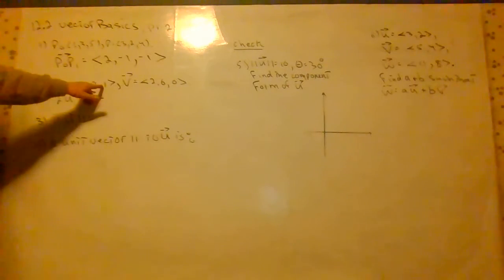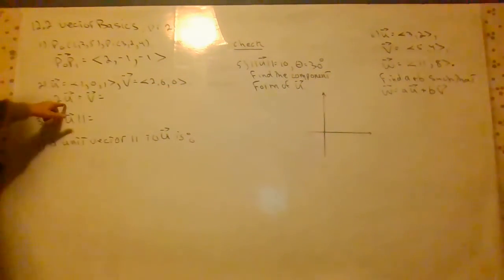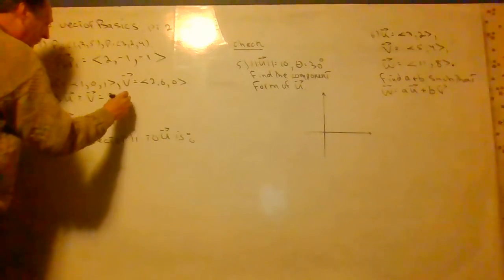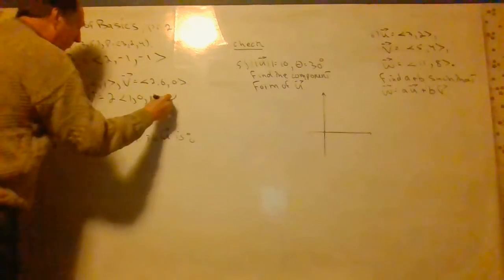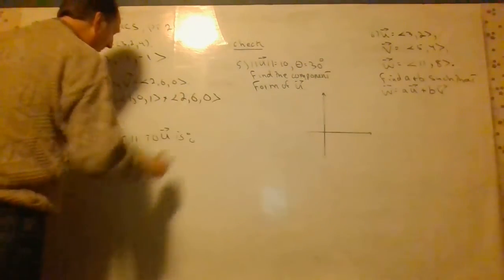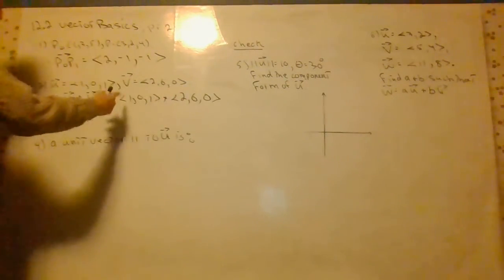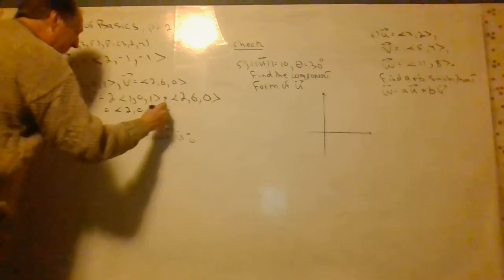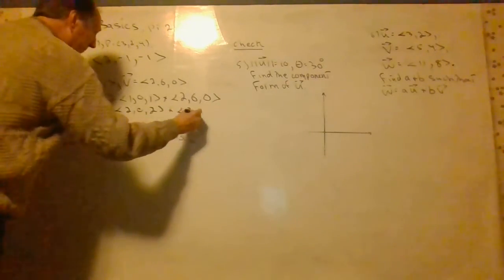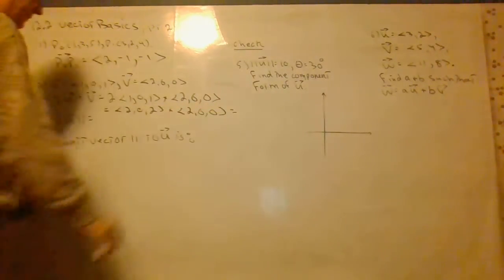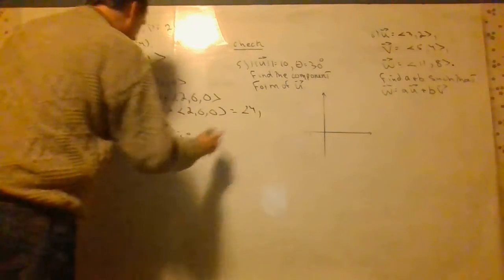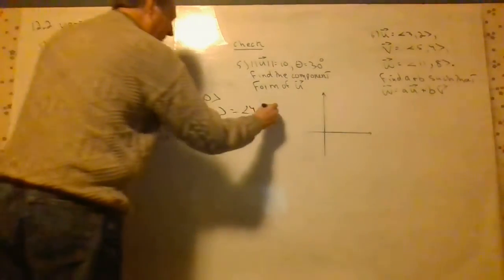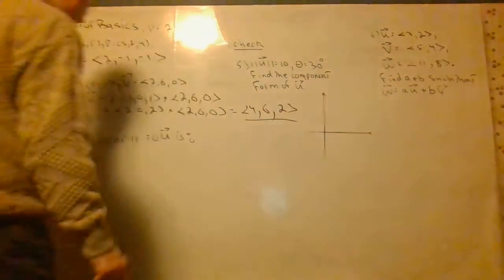Let's suppose u is (1, 0, 1), v is (2, 6, 0). We want to find 2u plus v. Let's plug our vectors in here: 2 times (1, 0, 1) plus (2, 6, 0). We have to do scalar multiplication before we can do addition. And so we get (2, 0, 2) plus (2, 6, 0). 2 and 2 is 4, 0 and 6 is 6, 2 and 0 is 2. There's our final answer.